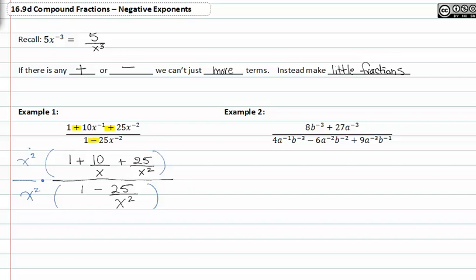When I multiply x squared to one, I just get x squared. Multiplying x squared to ten over x allows me to divide out one x, and I'm left with ten x in the numerator. Multiplying x squared to twenty-five over x squared allows me to divide out the x squared, and I'm left with twenty-five.